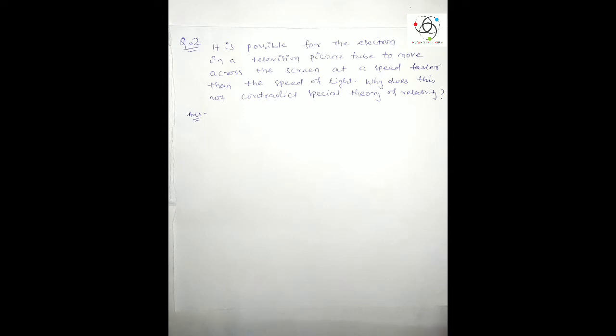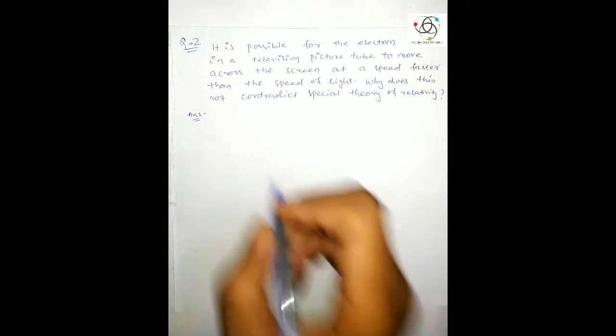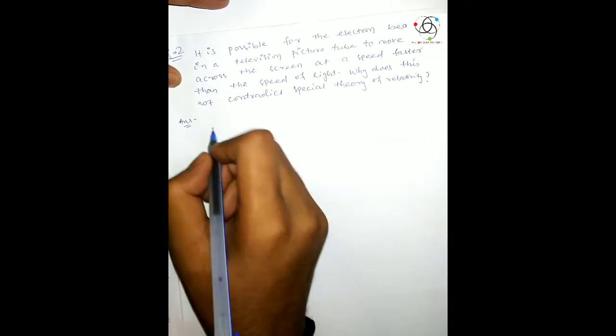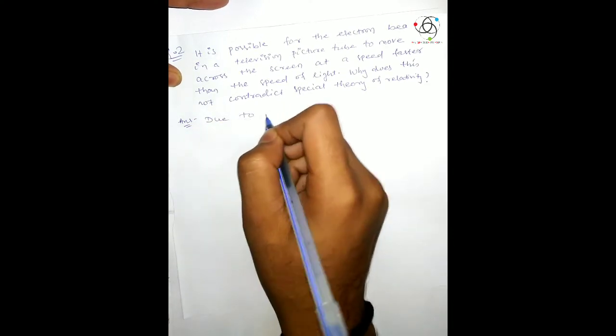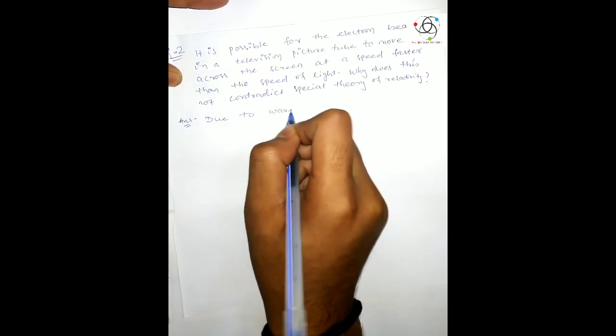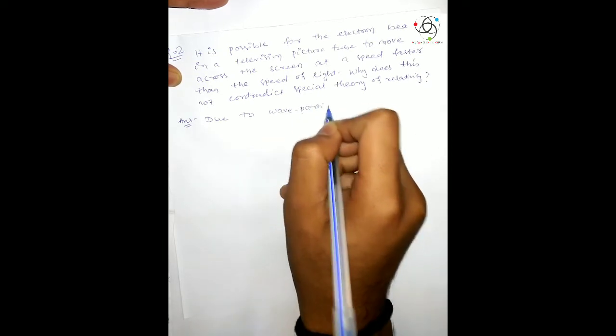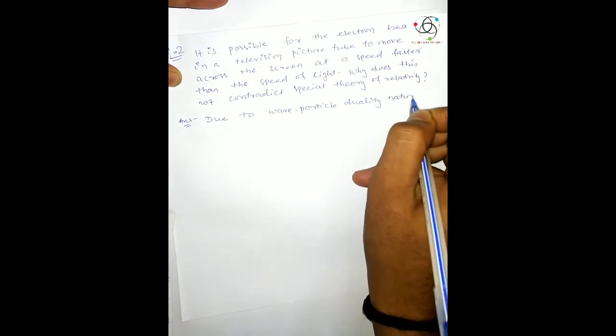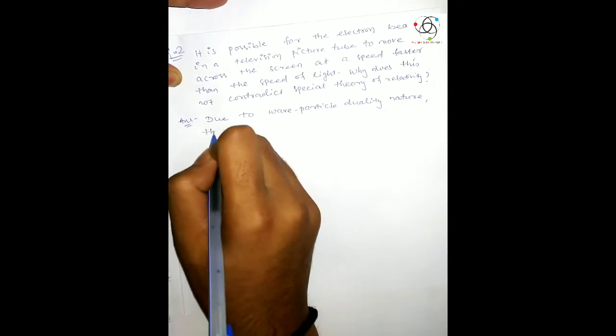Due to wave-particle duality, the relative speed may exceed the speed of light. But the relativistic phenomena is for particle only. Therefore, even if the electron beam moves faster than the speed of light in a television, it does not contradict the special theory.